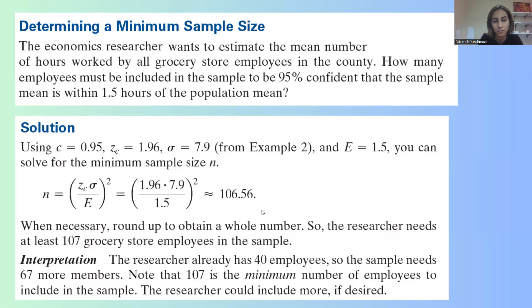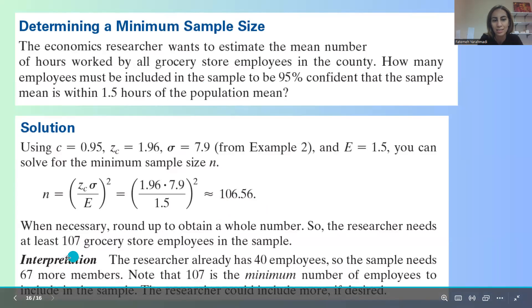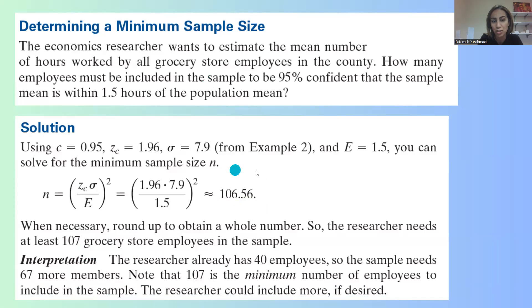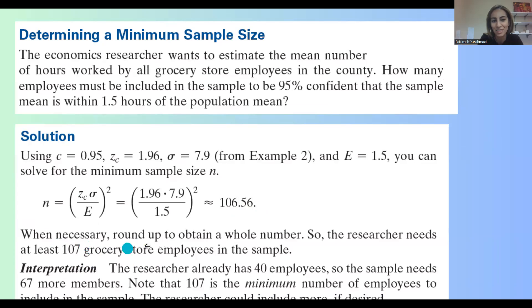But what's the meaning of that? It means that we need to ask at least 107 grocery store employees. So our information must be included of the data of 107 grocery store employees, so we get the mean within 1.5 hours of the population mean.